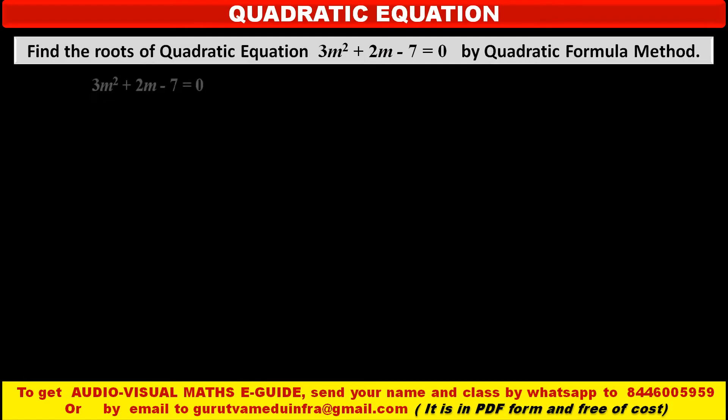The given quadratic equation is 3m squared plus 2m minus 7 is equal to 0, which we have to solve by the quadratic formula. So first we have to compare this equation with the general form of quadratic equation ax squared plus bx plus c is equal to 0.